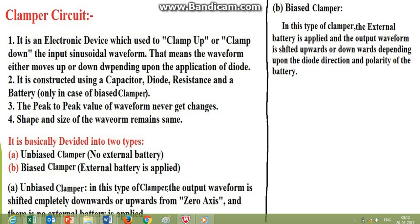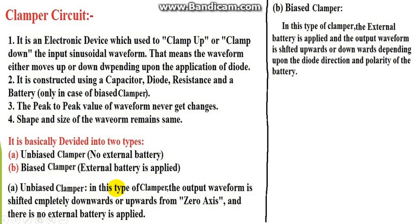Clampers are divided into two classes: unbiased clamper and biased clamper. In an unbiased clamper, we further have positive clamper and negative clamper. In a positive clamper, the wave is shifted in the upward positive direction, and in a negative clamper, the wave is shifted downward in the negative direction. In an unbiased clamper, there is no biasing battery, and the waveform shifts completely downwards or upwards from the zero axis.